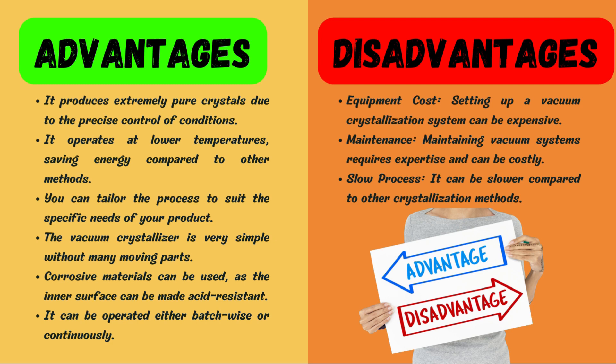However, there are some disadvantages to consider. The first is equipment cost: setting up a vacuum crystallization system can be expensive, as acquiring the necessary vacuum pumps and vessels requires significant investment. The second disadvantage is maintenance: maintaining the vacuum system requires expertise and can be costly, with regular maintenance essential to ensure efficient operation. The third disadvantage is a slow process: vacuum crystallizers are usually slower compared to other crystallization methods, which can be a drawback in industries where high production rates are crucial.